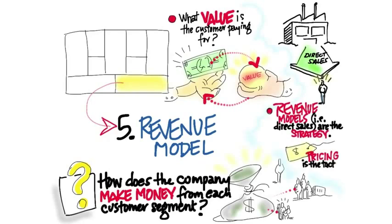What follows is then pricing — that's our tactics. So what we're going to try to figure out is: what's our strategy? Revenue streams. And what's our tactics? Pricing. Together, that means how does a company make money from each customer segment.